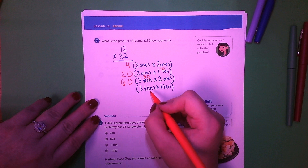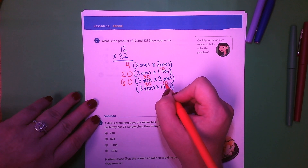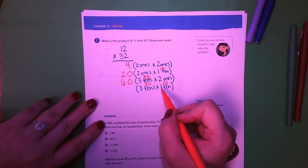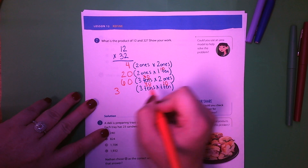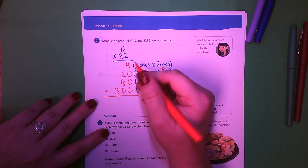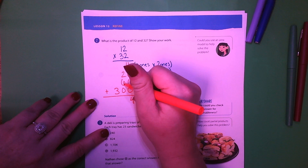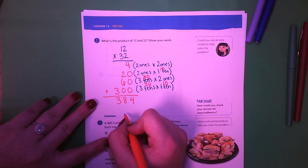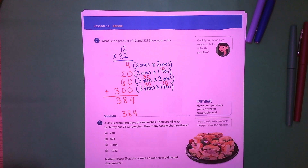3 tens, which is 30, times 1 ten, which is 10: 3 times 1 is 3, and then we add our two zeros, so that's 300. Adding together: 4 plus zeros is 4, 6 plus 2 is 8, and then bring down our 3. So our answer is 384.